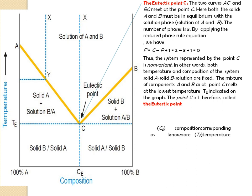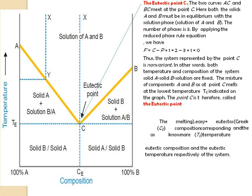Point C is therefore called the eutectic point. The temperature at the eutectic point is known as Te, the eutectic temperature. The composition at the eutectic point is known as Ce, the eutectic composition. Eutectic composition and eutectic temperature are denoted by Ce and Te respectively.